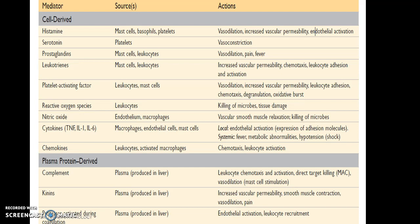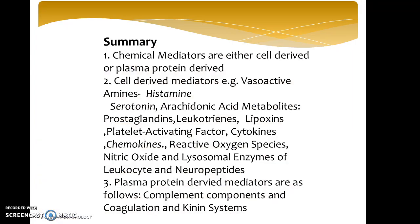To summarize: chemical mediators of inflammation are either cell-derived or plasma protein-derived. Cell-derived mediators include the vasoactive amines histamine and serotonin, and de novo mediators such as arachidonic acid metabolites — prostaglandins, leukotrienes, lipoxins — platelet activating factor, cytokines, chemokines, reactive oxygen species, nitric oxide, lysosomal enzymes of leukocytes, and neuropeptides. In today's class, we discussed plasma protein-derived mediators: complement components and the coagulation and kinin systems.